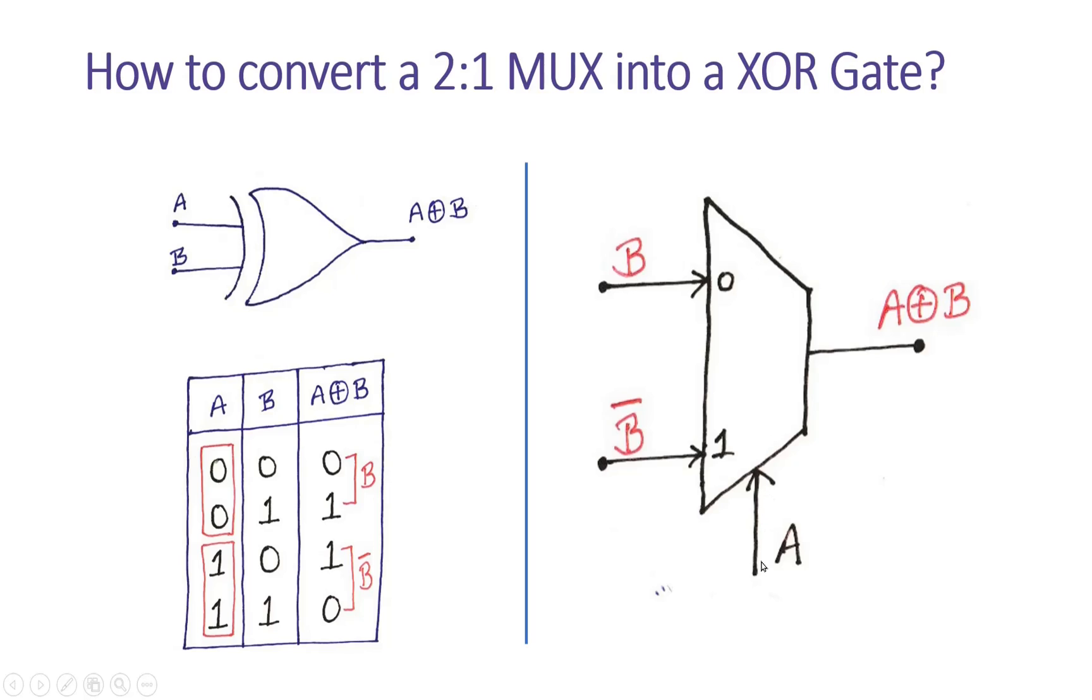Similarly, when A is 1, I know that I1 will be passed to the output of the multiplexer. Let us see what the expected value is. When A is 1, the expected value equals B bar (NOT B), because when B is 0, output is 1, and when B is 1, output is 0. So we will apply B bar at the I1 input. This is how we implement an XOR gate using a 2-to-1 multiplexer.